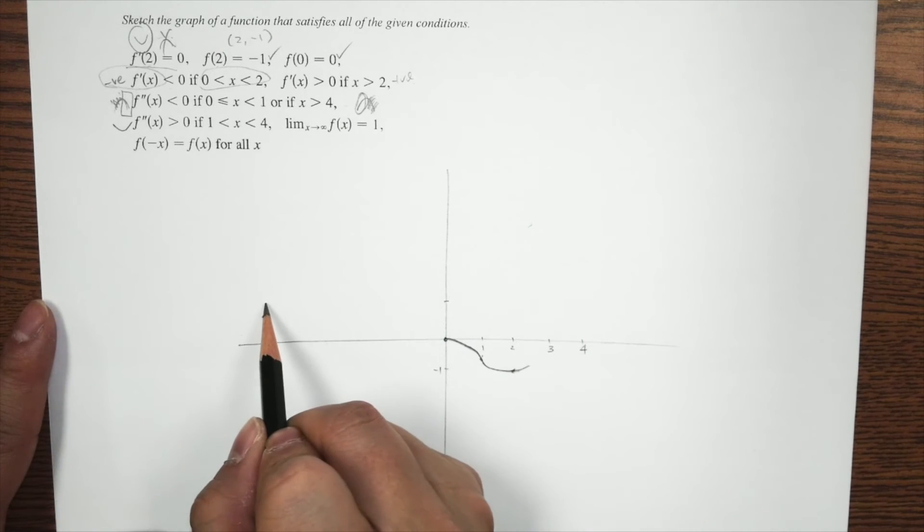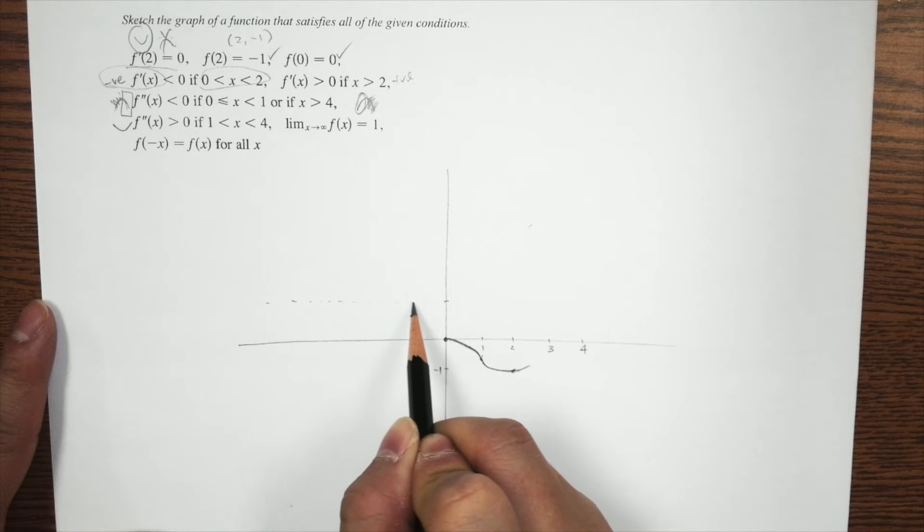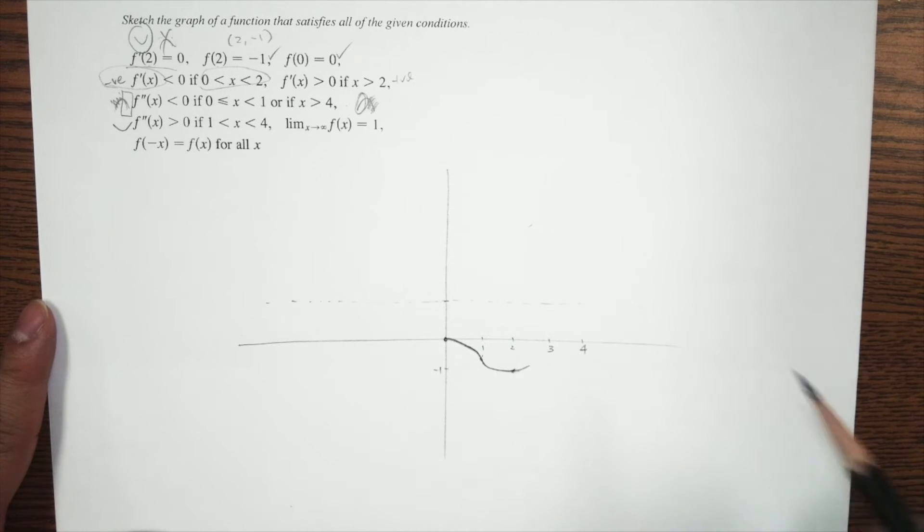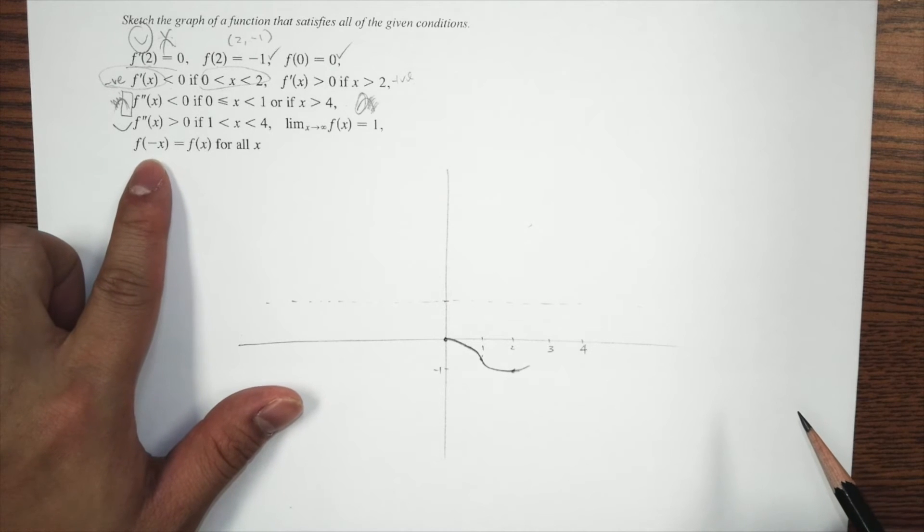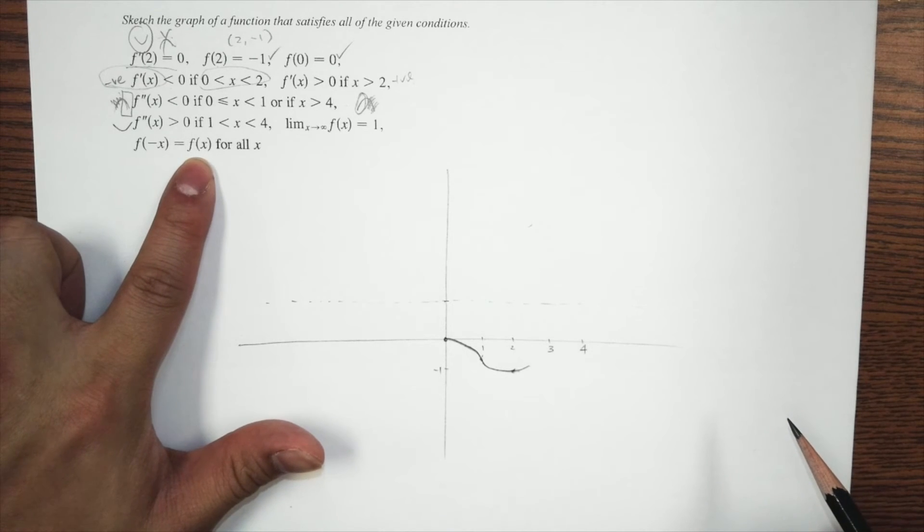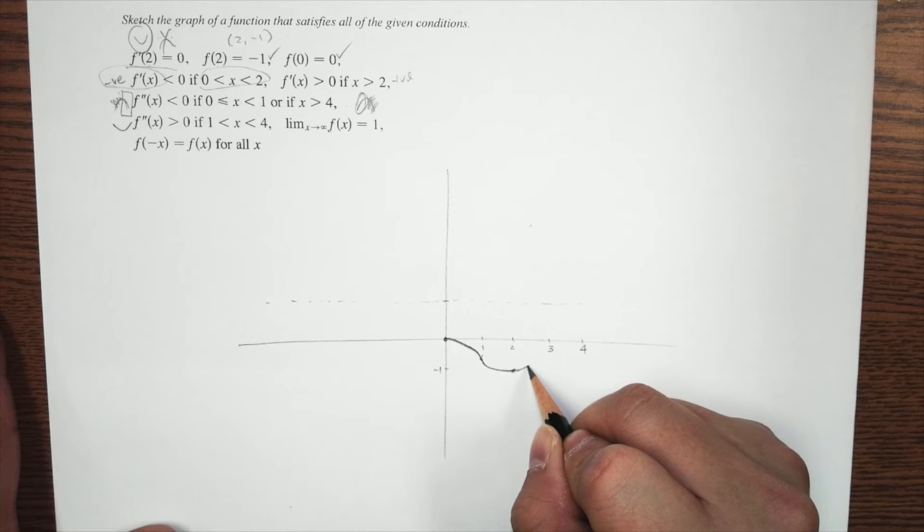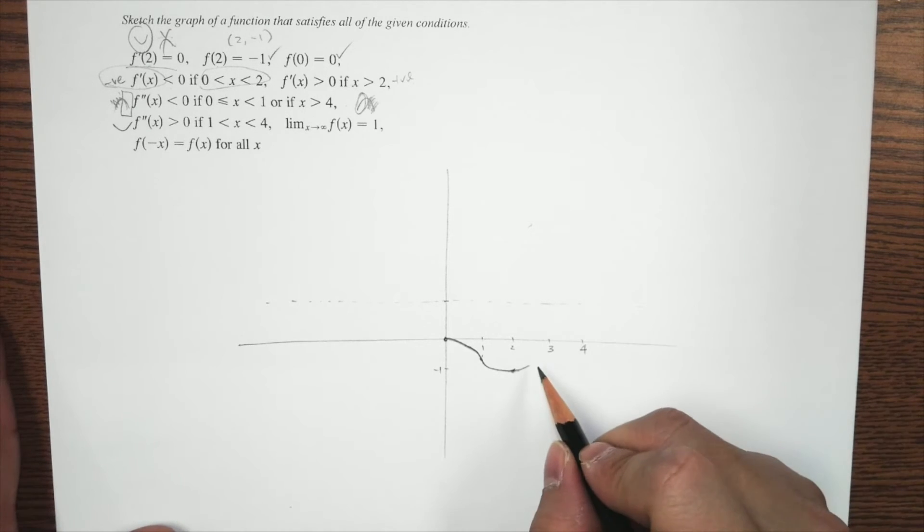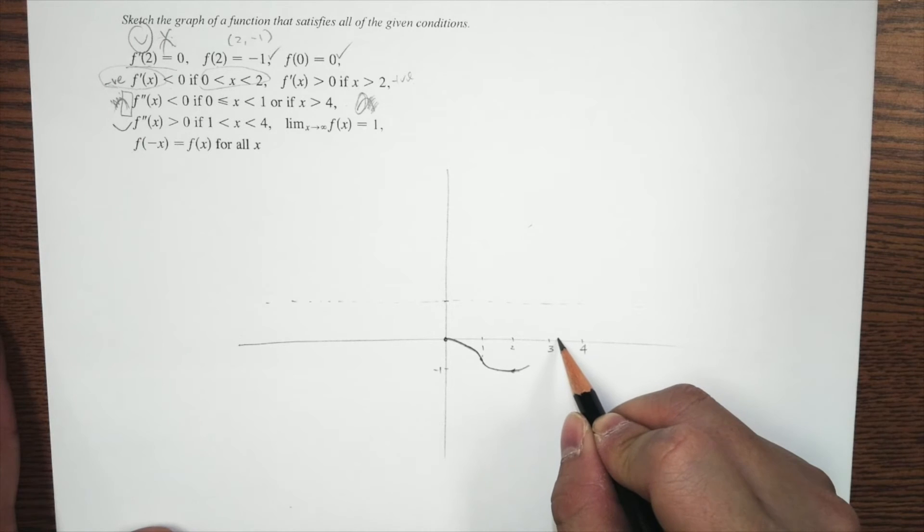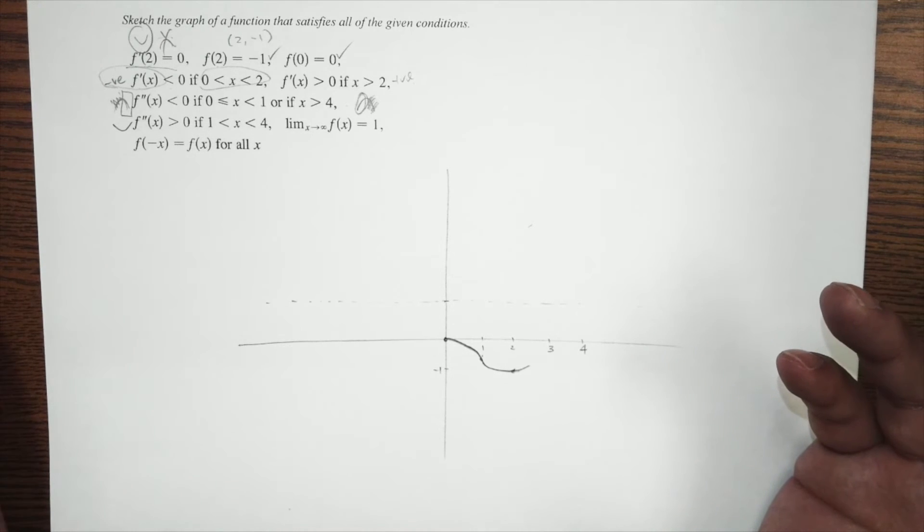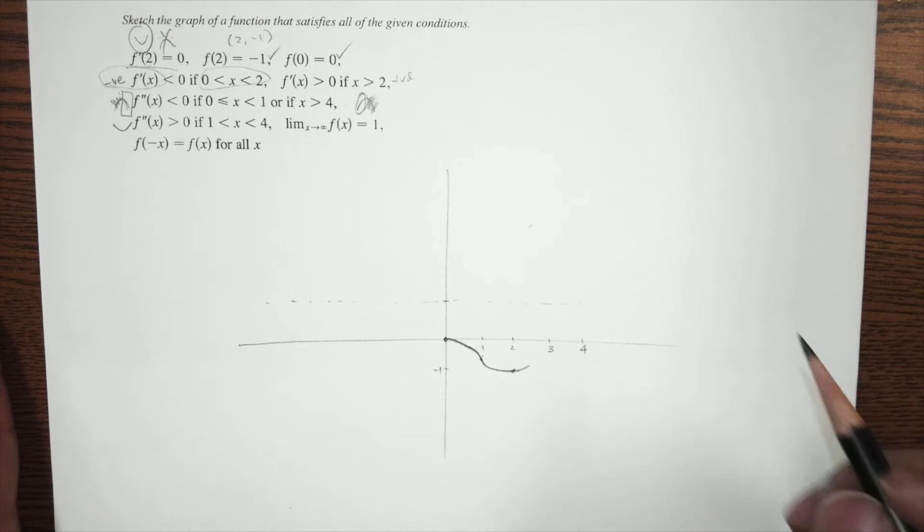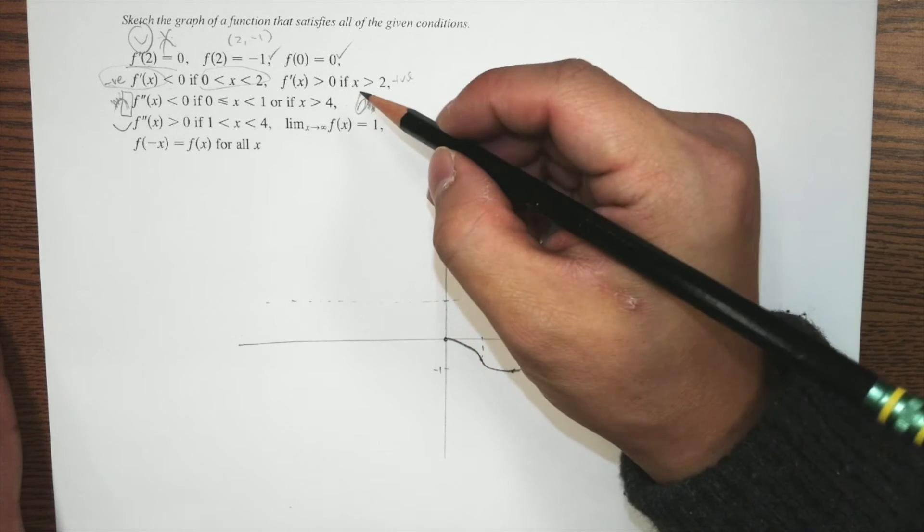And then it says limit as x approaches to infinity of the function is equal to 1. So that means there's a horizontal asymptote at 1. And the other thing, it's f of negative x is equal to f of x. Now we can take care of this at the very last. So let's go to here. Doesn't matter where we cut the x-axis. Well, since it doesn't say any point in particular, that means we can cut the x-axis in any point.